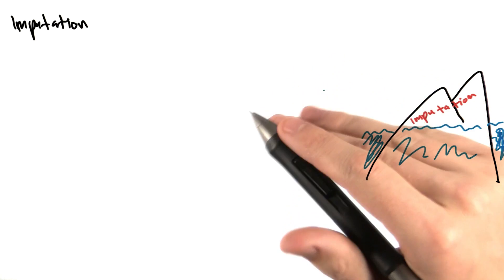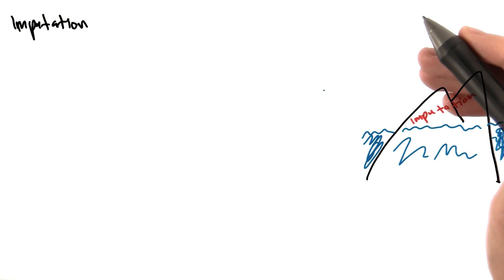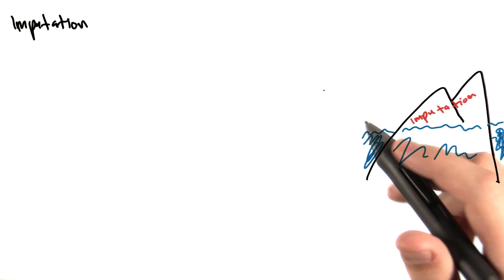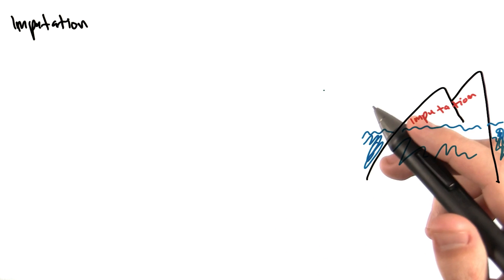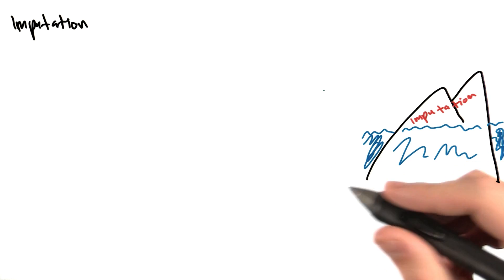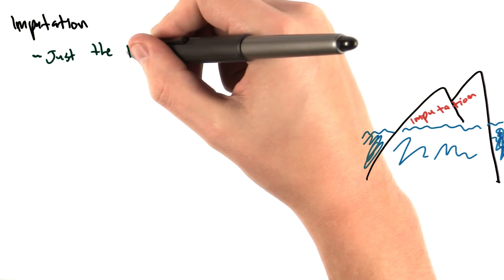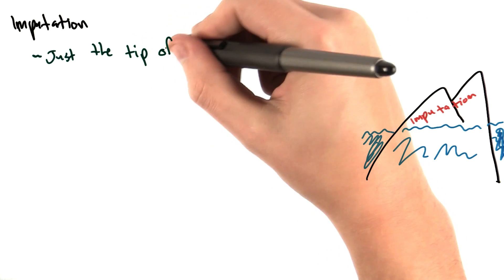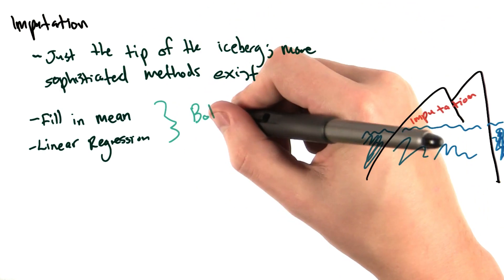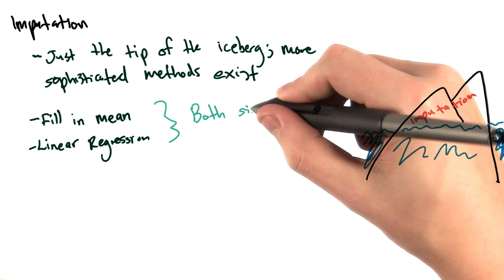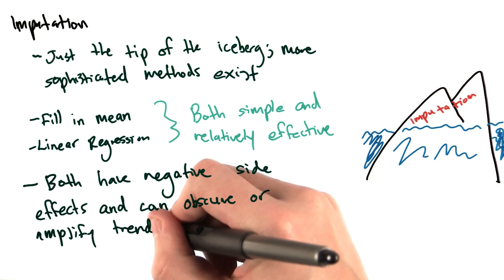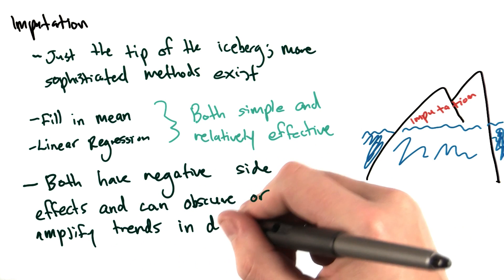These methods are literally just the tip of the iceberg when it comes to data imputation. I wanted to make sure that you were exposed to the concept, but there are much more robust and sophisticated methods to fill in missing values in your data. Filling in the missing values in a dataset by computing the mean of the field in question or fitting a linear model are somewhat effective and simplistic methods, but they can both have negative side effects and amplify or attenuate pre-existing trends in your data.